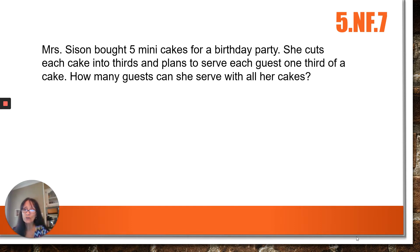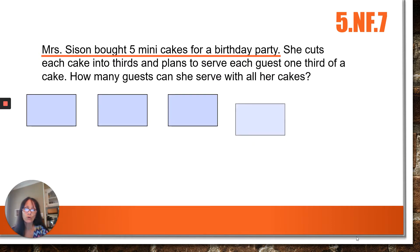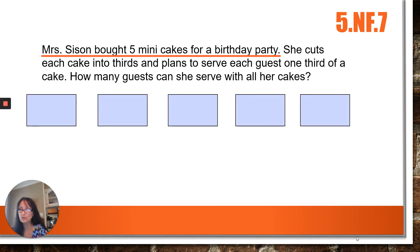So let's look at that first sentence. How many cakes did she buy? Five. So let's draw those — one, two, three, four, five. Since we have finished with that sentence, we're going to line it out.